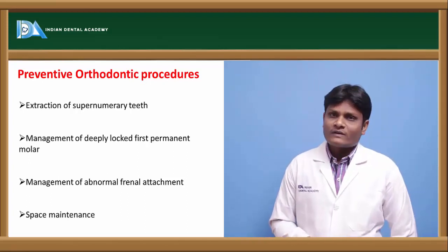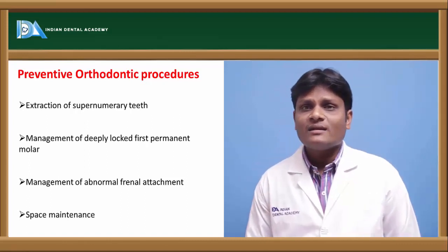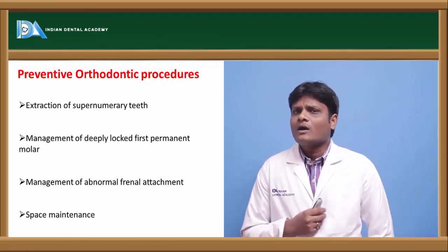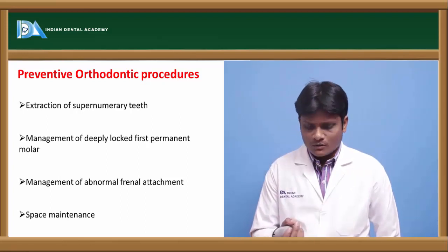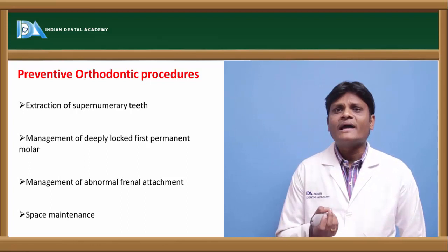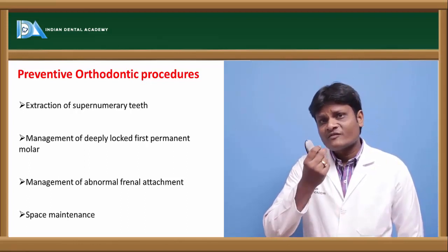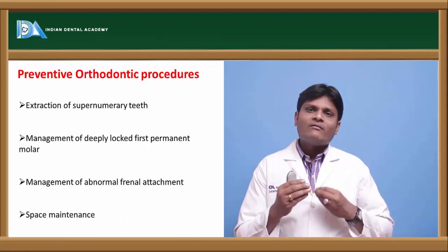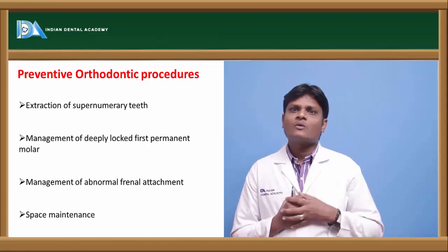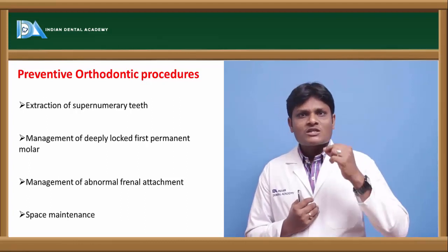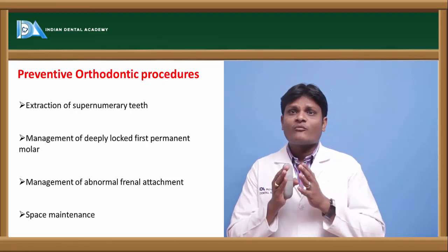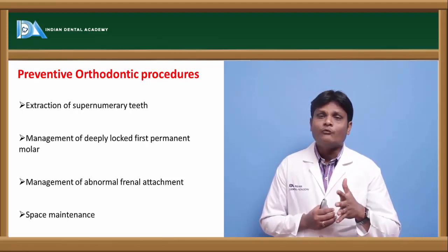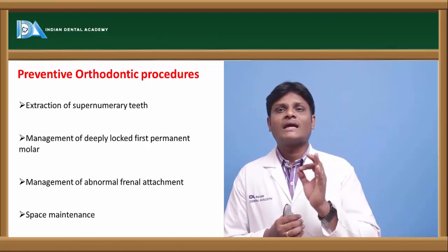Management of abnormal frenal attachment: most commonly seen in the maxillary labial frenum. If the frenum is attached almost at the crestal region of the ridge, or if the labial frenum has a high attachment with its fibers extending even into the interdental papilla between the two central incisors, whenever the lips are in function the frenum will cause a pulling force over the interdental papilla, leading to notching of the interdental bone between the two central incisors and appearance of midline diastema. Presence of an abnormal frenal attachment thus leads to malocclusion.